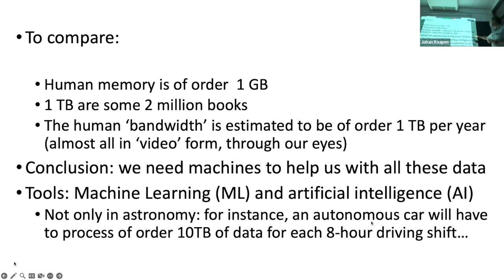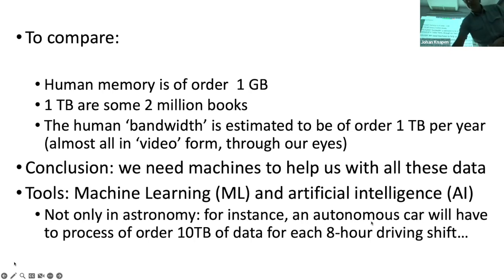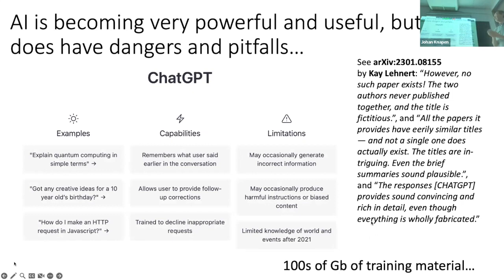The tools we use are often related to machine learning and artificial intelligence. This doesn't happen only in astronomy — it happens everywhere. For instance, an autonomous car processes around 10 terabytes of data for an eight-hour driving shift. So big data is everywhere. Artificial intelligence is becoming very powerful and useful, but it does have dangers and pitfalls.